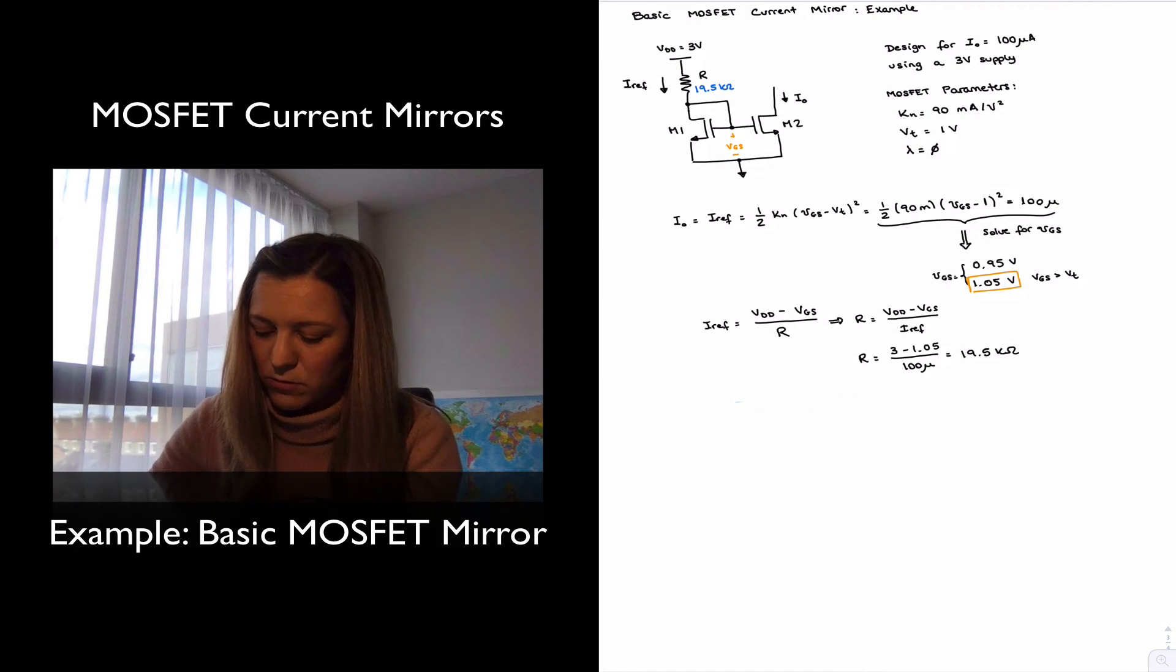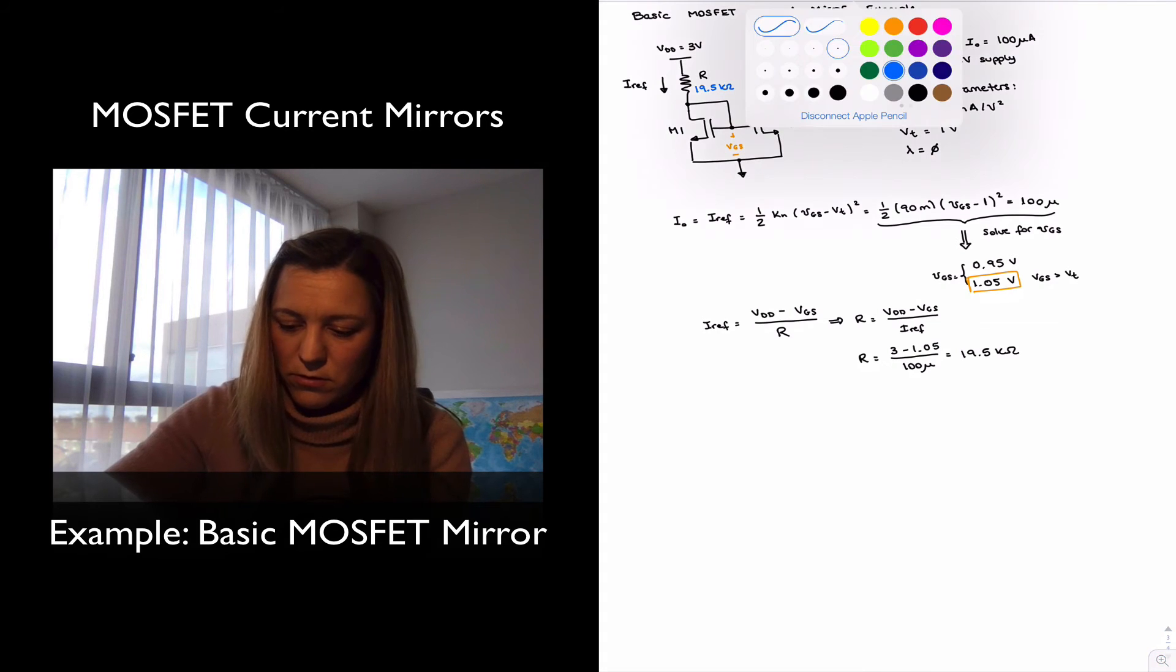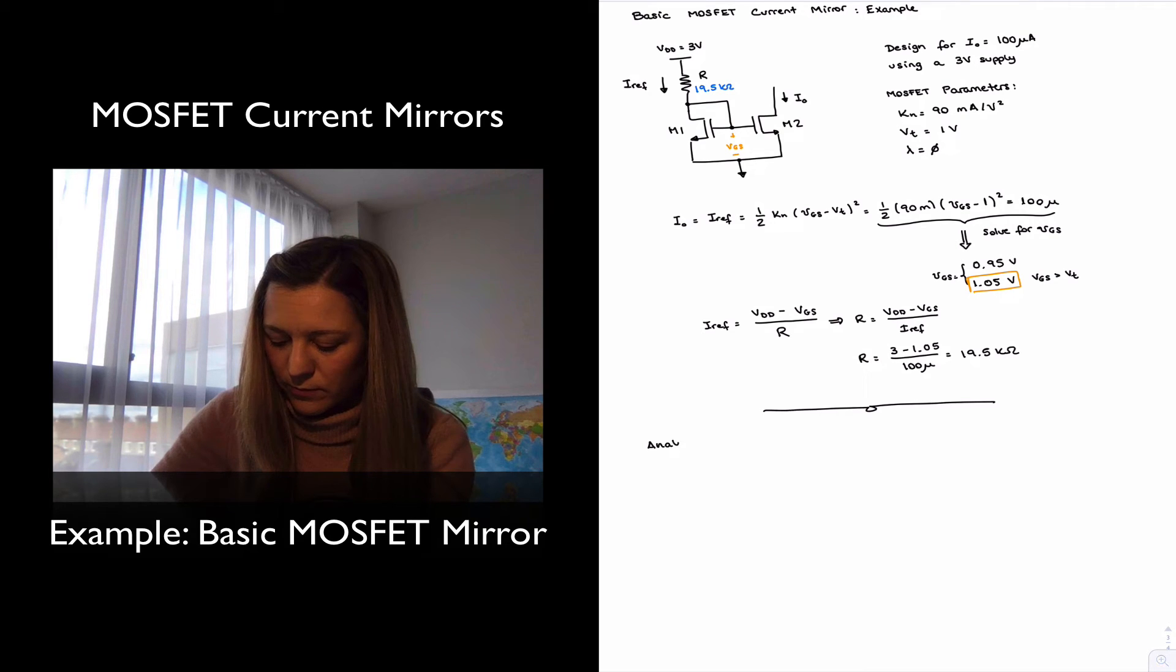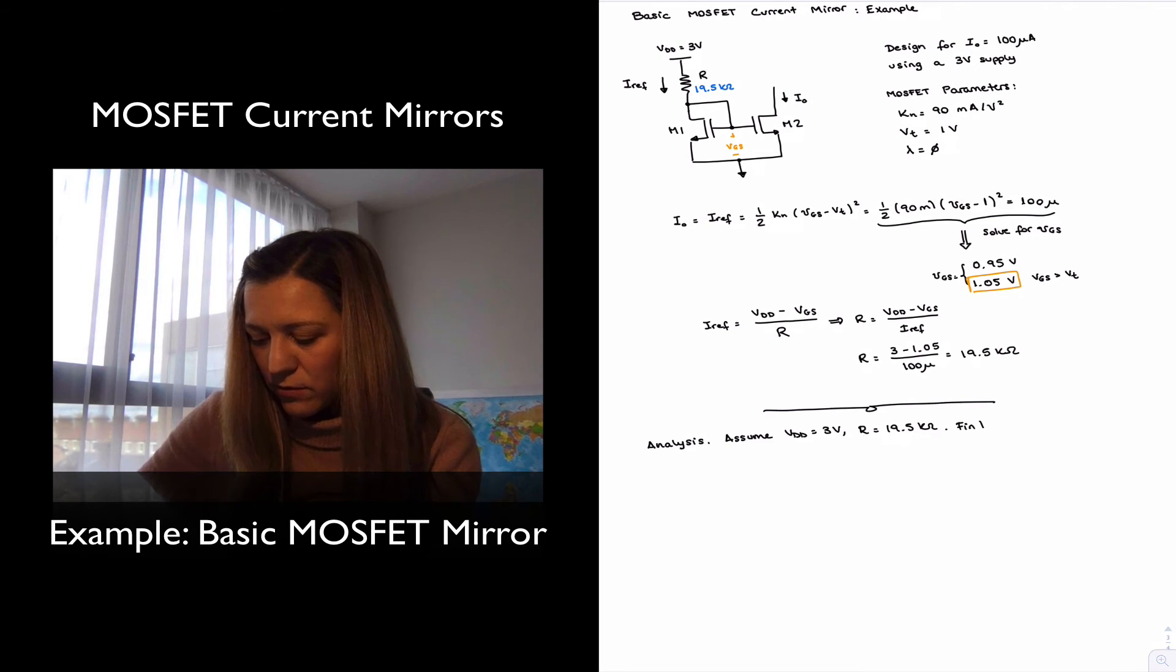And so we can go ahead and try to write down the procedure if this was instead an analysis problem. Assume VDD is 3 volts and R is 19.5 kilo ohms, find I out.